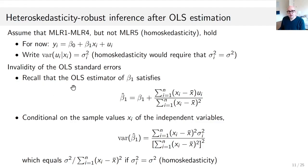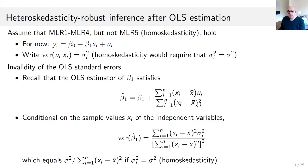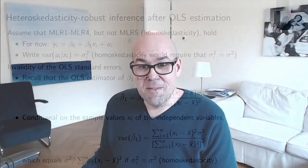Starting with the OLS estimator of beta one in the simple regression model — just an intercept and a slope — we can write beta hat one as beta one plus a fraction involving the covariance between the error terms and the x's divided by the variance of the x's. Let's re-derive this quickly so we understand what's going on.